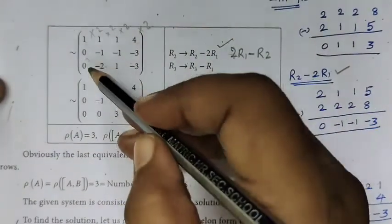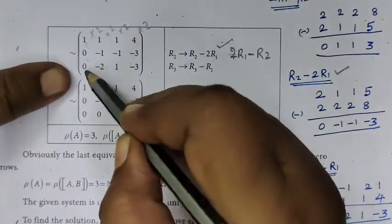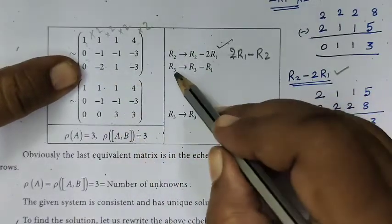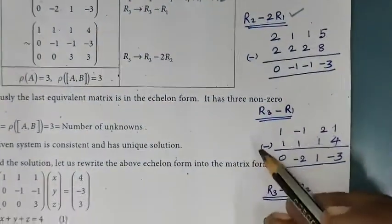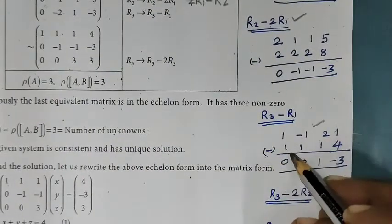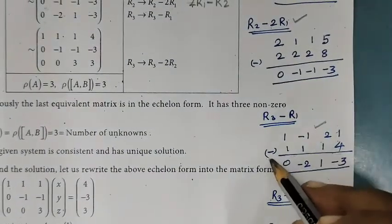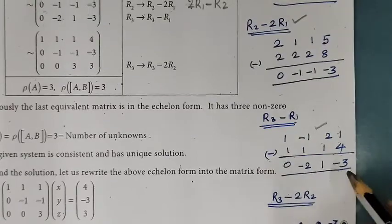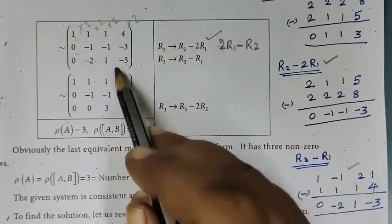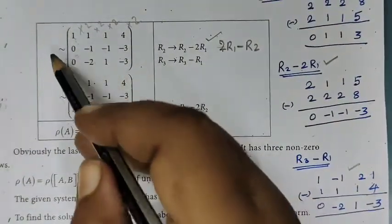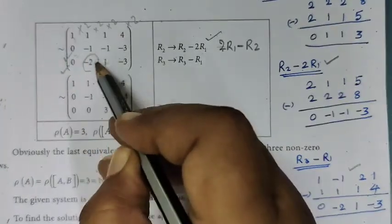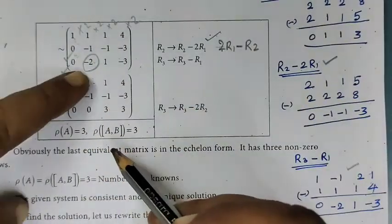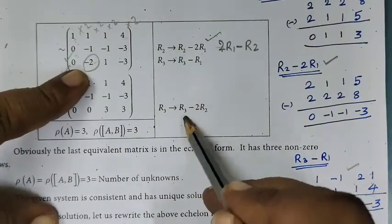The second step is the element is 0. What is R3? R3 minus R1. R3 is equal to R3 minus R1. Now the two are 0. If we do this, this is the number. We are going to transform here.